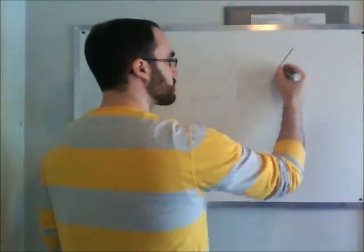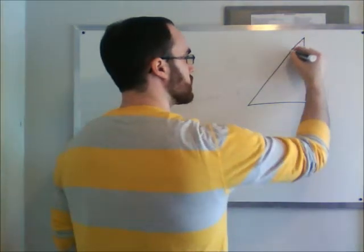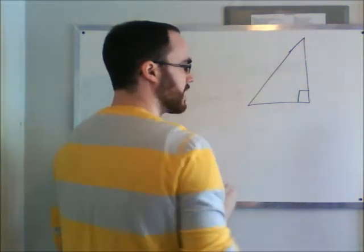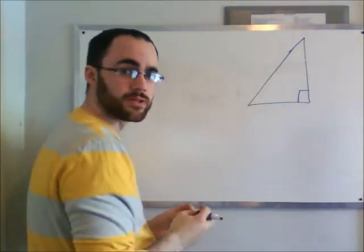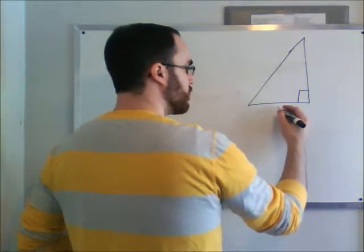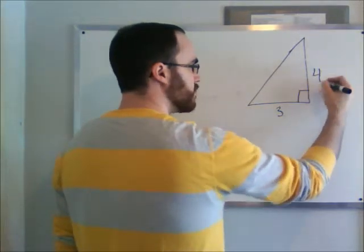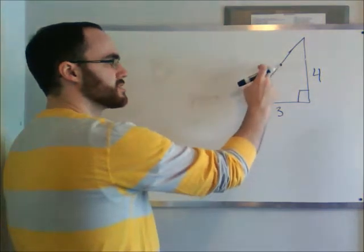So let's say we have a triangle like this that has a 90-degree angle in the corner. If we're told that this side is three and this side is four, Pythagorean theorem asks us what is the third side's length.